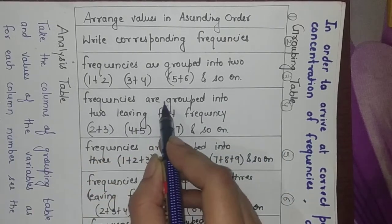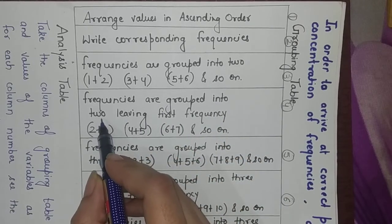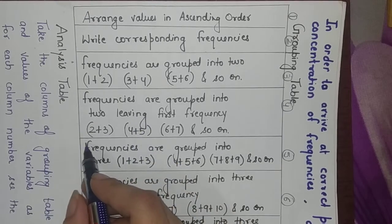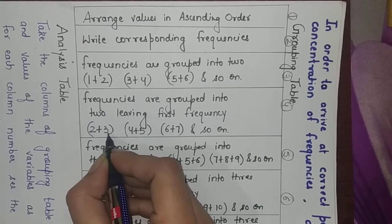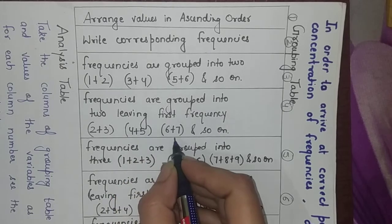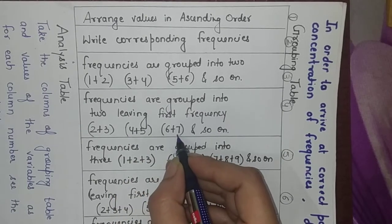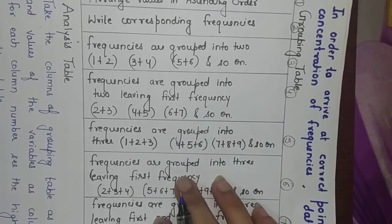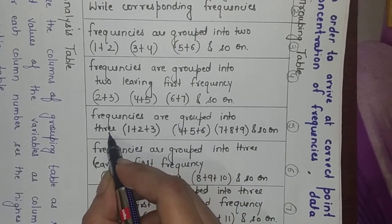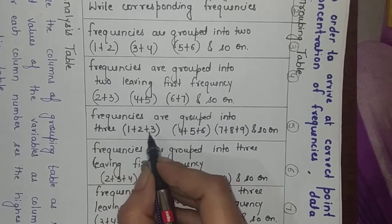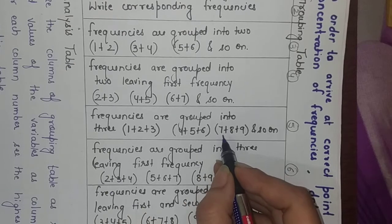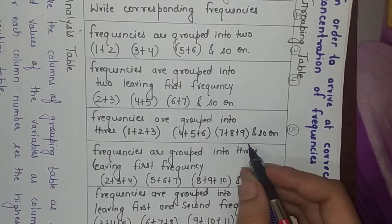Then comes the fourth column. Here we also group frequencies into two, but we skip the first frequency and start pairing. So second plus third, fourth plus fifth, sixth plus seventh, and so on. Then comes the fifth column where I group frequencies in threes: first, second, third, then fourth, fifth, sixth, then seventh, eighth, ninth and so on.